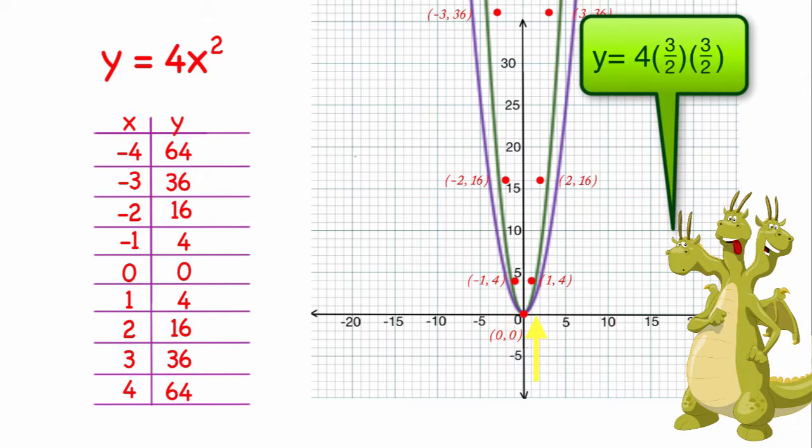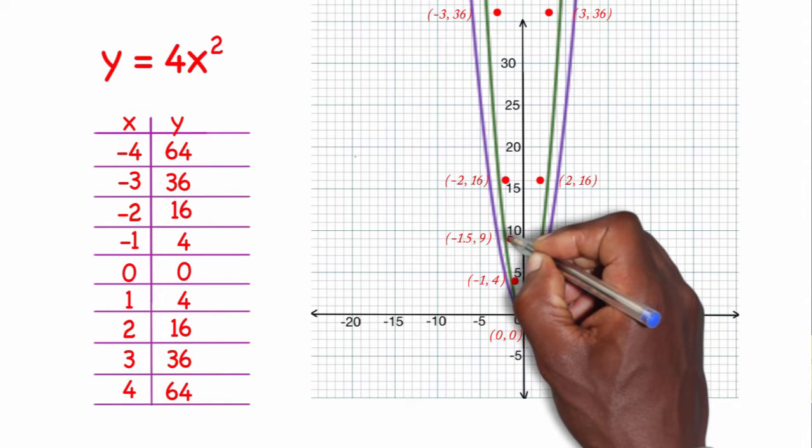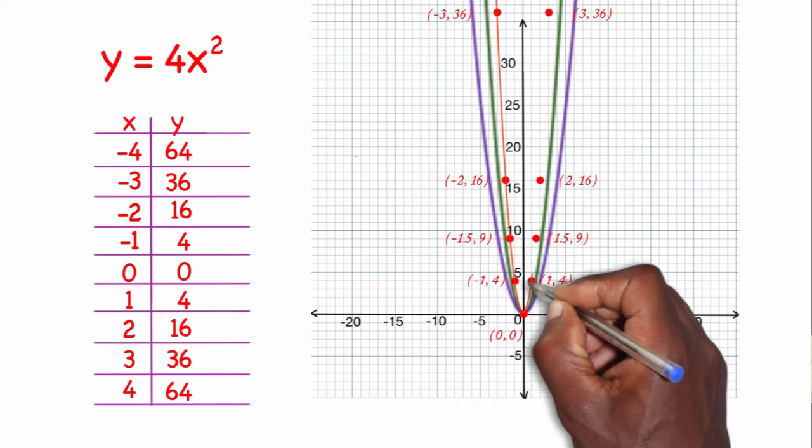So 4 times 3 halves to the second power - 3 halves squared is 9 fourths times 4 is 9. 4 times negative 3 halves squared is 9 fourths times 4 is 9. So I'll graph negative 3 halves, 9 and 3 halves, 9 and I'll draw that graph as well.